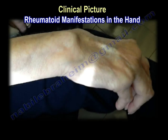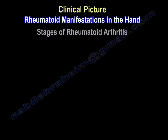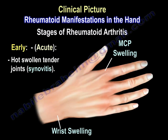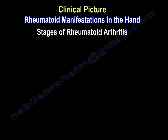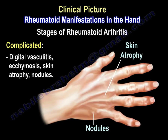Rheumatoid arthritis manifestations in the hand: stages include early, acute, hot, swollen, and tender joints from synovitis. Here you can see swelling of the metacarpophalangeal joint and flexor tendon synovitis. Complications include digital vasculitis, ecchymosis, skin atrophy, and nodules.